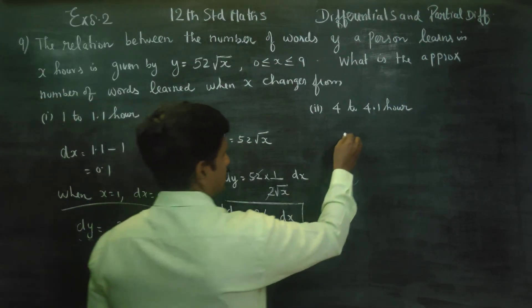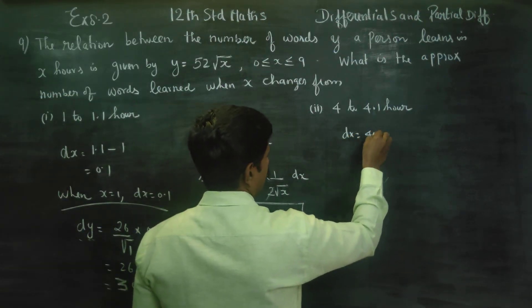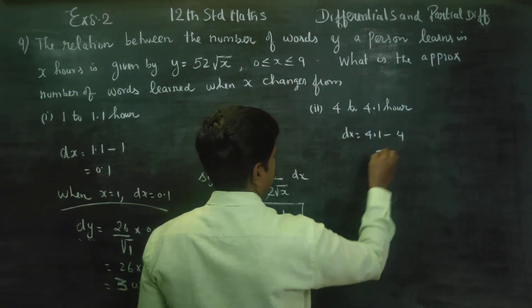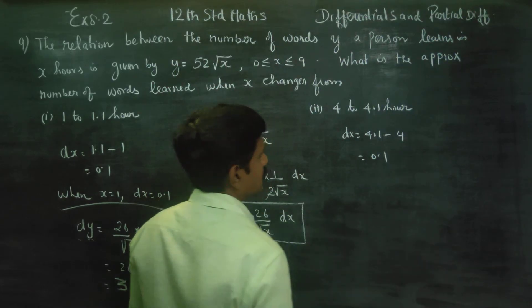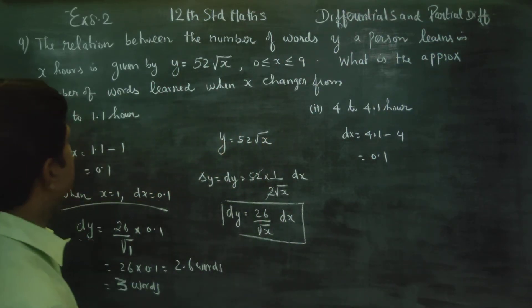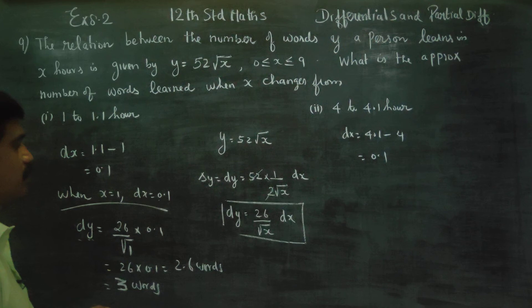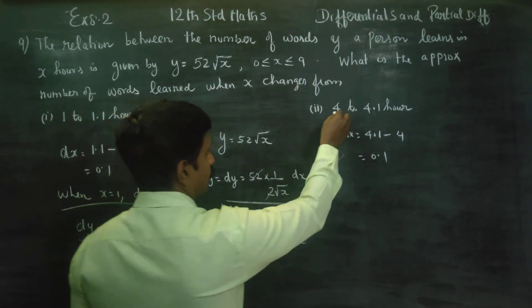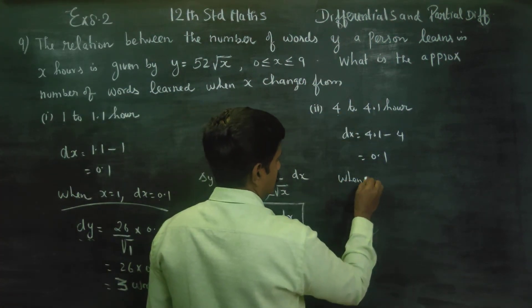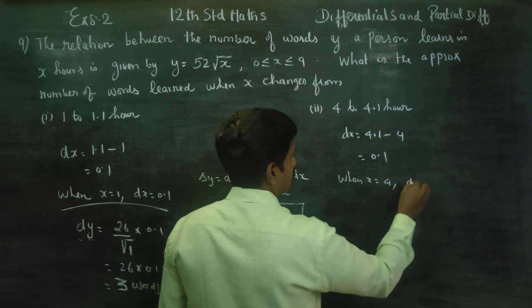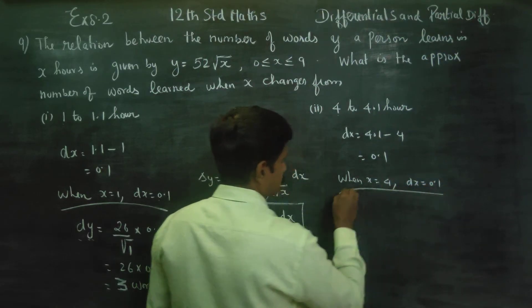Same concept. dx is equal to 4.1 minus 4. Therefore, again, answer is 0.1. When x is equal to 4, dx is equal to 0.1. You have to substitute here.